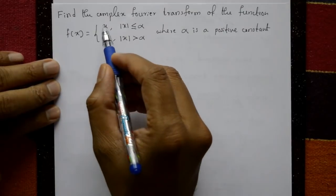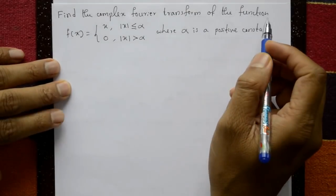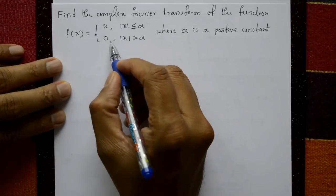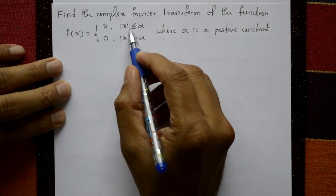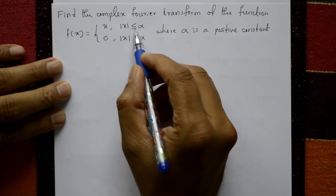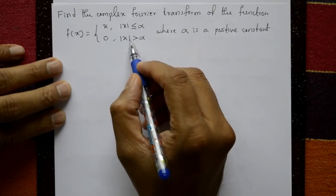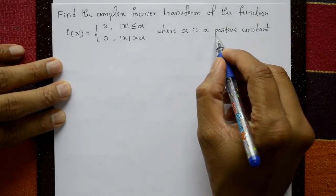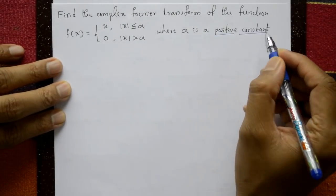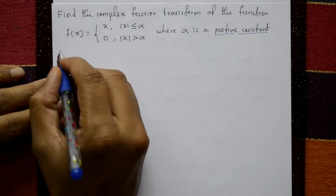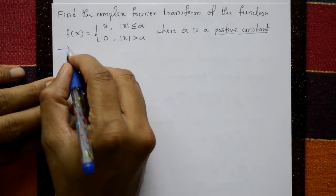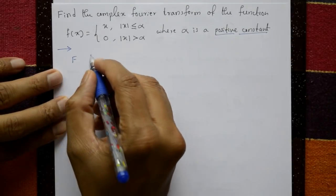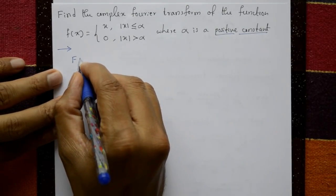Find the complex Fourier transform of the function f(x), where f(x) equals x for |x| ≤ α and 0 for |x| > α, where α is a positive constant.